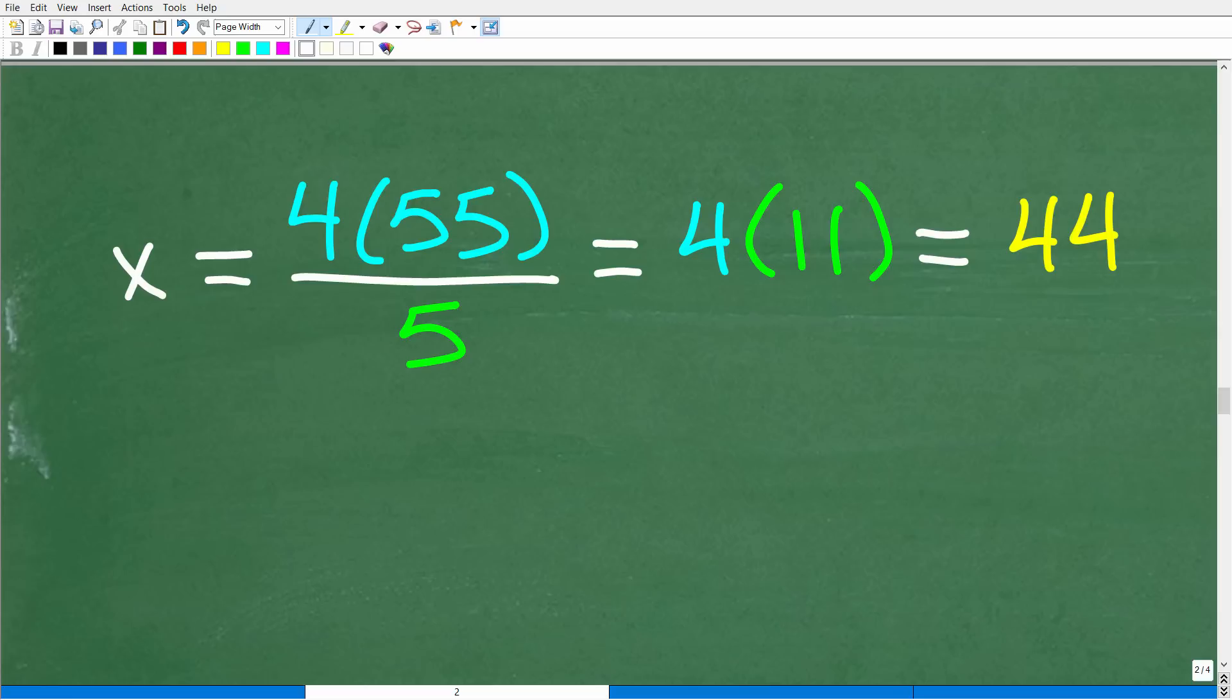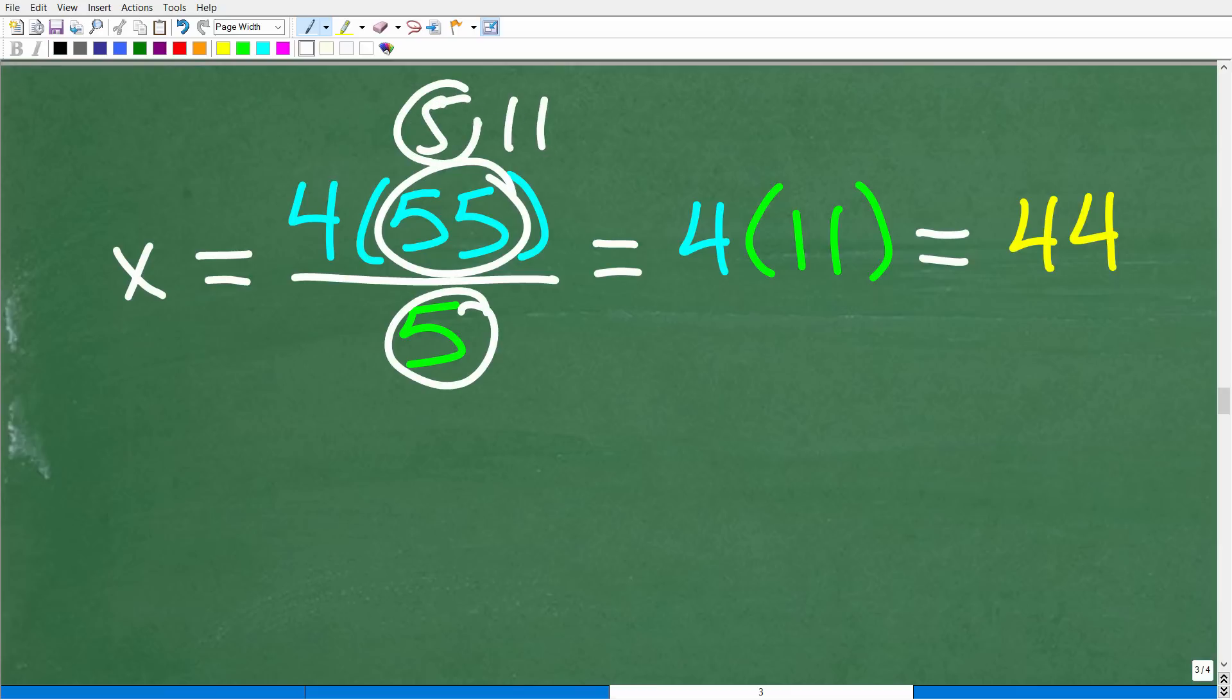Hopefully, okay, for those of you that are up to speed on simplifying and reducing fractions, you could see that 55 is the same thing as five times 11. Okay, so I have a five down here and a five over here, I could cross cancel these like factors, right? Or five goes into 55 eleven times. So this just leaves me with the problem, four times 11, and most of us can do that in our brain, which of course is 44.